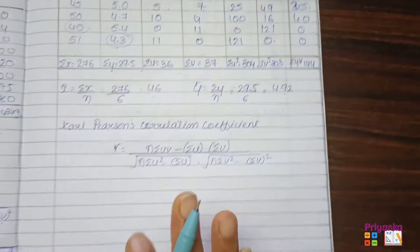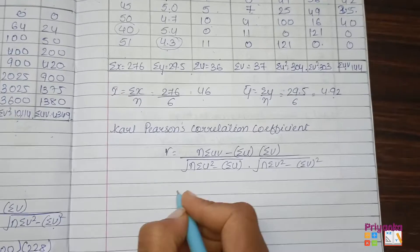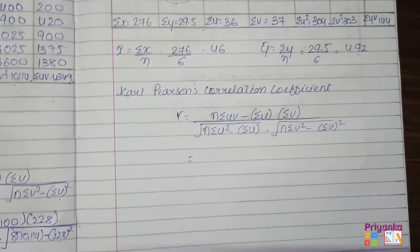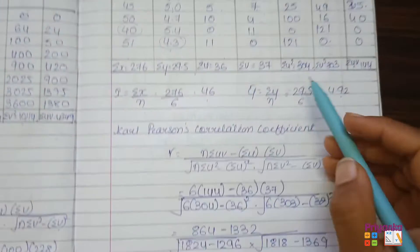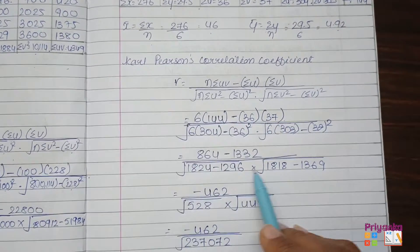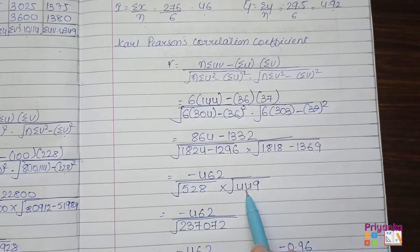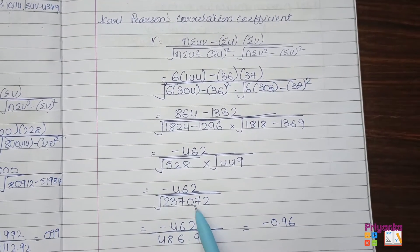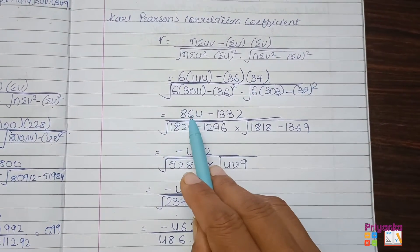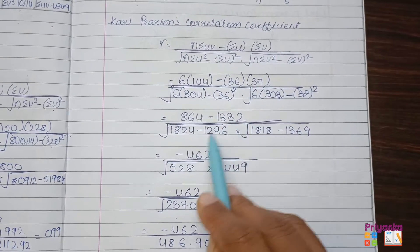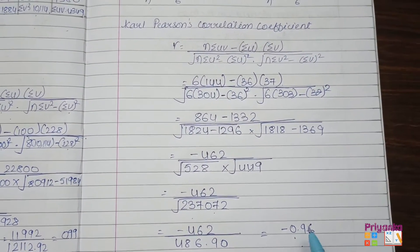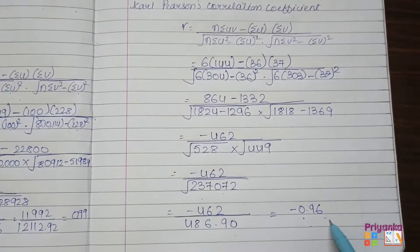Let's put all the information into the same Carl Pearson formula used in Question 1. Place all values into the formula, carry out the multiplications, subtractions, and remove the square root step by step. Here we get the answer minus 0.96. Remember the answer is negative because this variable shows an inverse relationship. Hence, the correlation coefficient by the Carl Pearson method is minus 0.96.